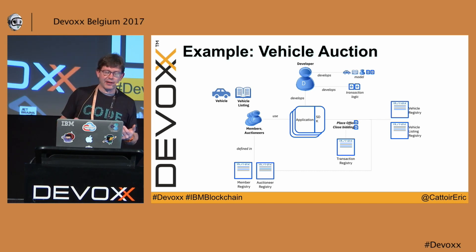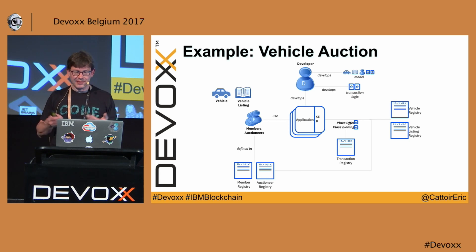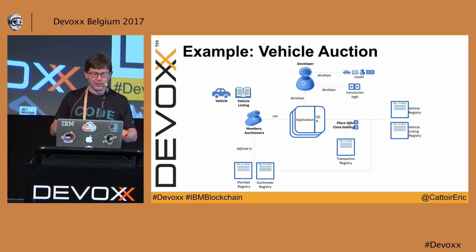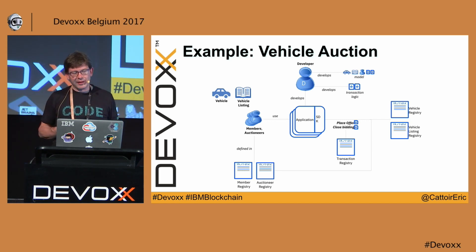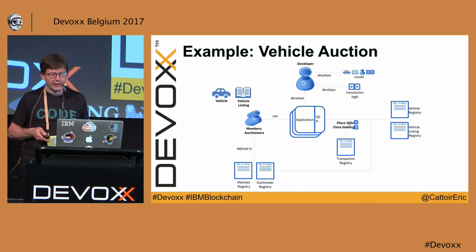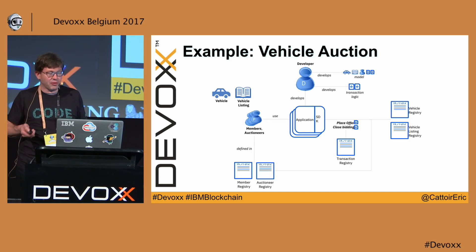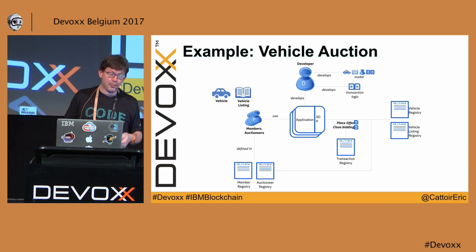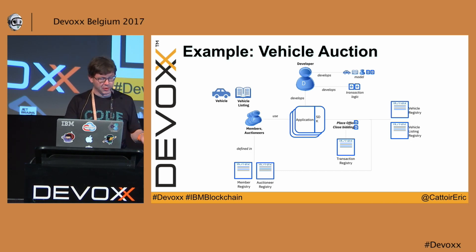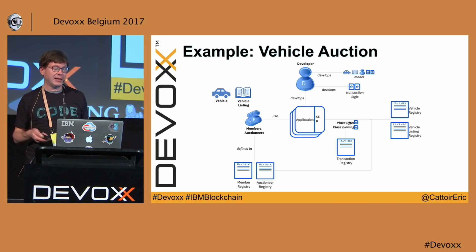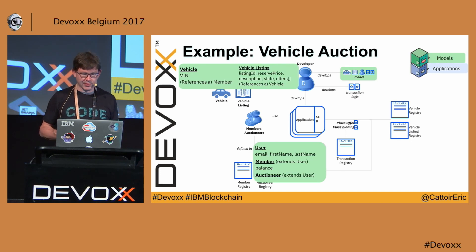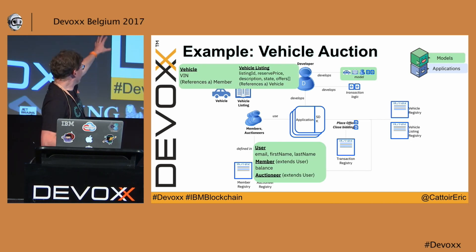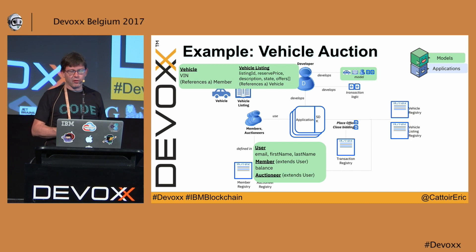From a viewpoint of entities, a big role is played by the listings of the car — describing what the car is, the minimum price, and all those things. The transactions will be bids on the car. Those bids follow certain rules, and those rules you're going to bake into the smart contract.